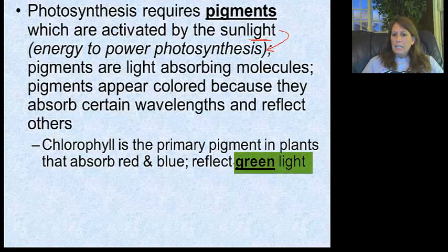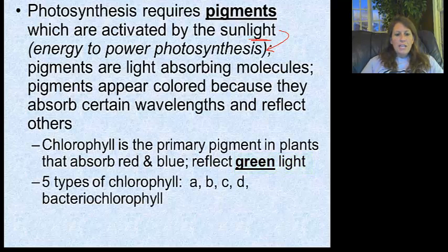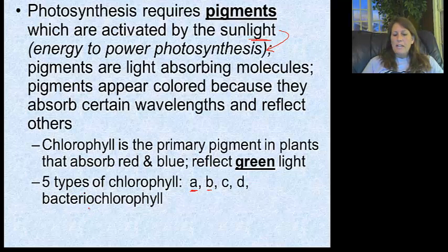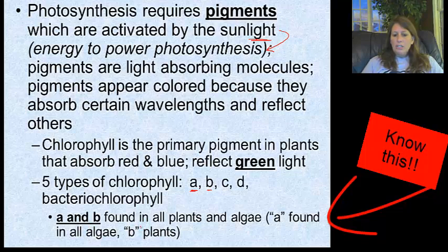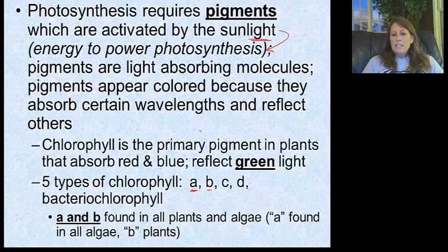Chlorophyll reflects green, which is why plants appear green. There are five types of chlorophyll you need to know: a, b, c, d, and instead of e, the fifth is called bacterial chlorophyll because it's directly associated with bacteria. The two main ones in most plants are a and b. Chlorophyll a is found in algae, and chlorophyll b is found in all other types of plants. Types c and d get into blue-green algae. The vast majority of chlorophyll is a and b, so we won't worry much about the other three.